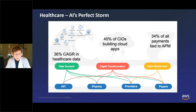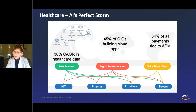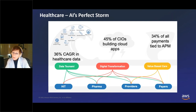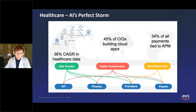The next change is that everybody's moving to the cloud — and that's great, because that's where the algorithms live. And then last but not least is the fundamental shift in payments in healthcare, where 34% of all payments are tied to APMs or alternate payment models. We're moving away from fee-for-service to a value-based world, and in a value-based world, you really need to anticipate and predict the future so you can shape it into the future you want.